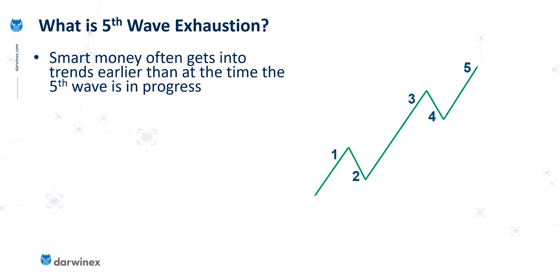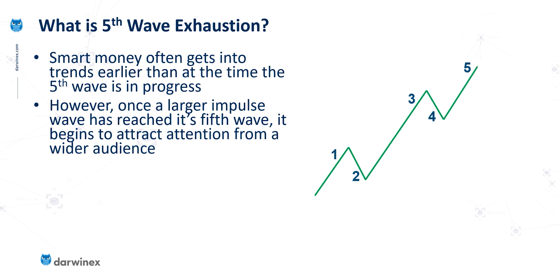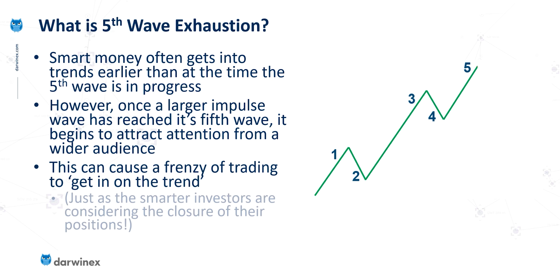Let's think for a moment about how trends evolve. Very often the smart money gets into the trends early, far before we ever get to the point of a fifth wave. Once a larger impulse wave reaches that fifth wave stage, it begins to attract a lot of attention from a much wider audience — traders start to notice this on the price charts. And when they do, it can often cause a frenzy of trading activity as those traders try to get in on the trend. Just as those traders are entering, the smarter traders and investors are considering the closure of their positions. And that is a lesson in itself. That's why we often see this great increase in volume during the latter stages of an impulse like this.